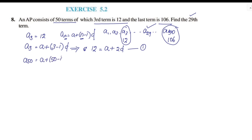A50 equals a plus 50 minus 1 into d. So A50 equals a plus 49d, and A50 equals 106. So 106 is equal to a plus 49d.